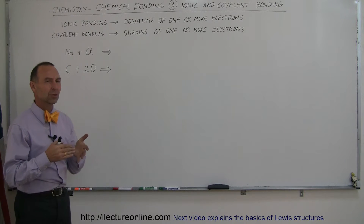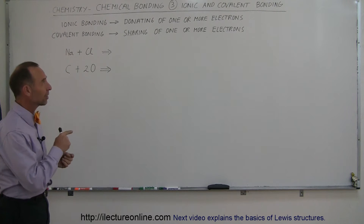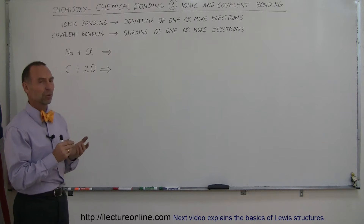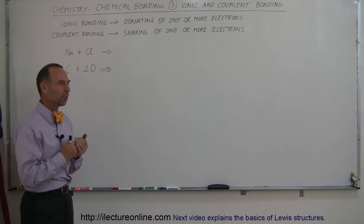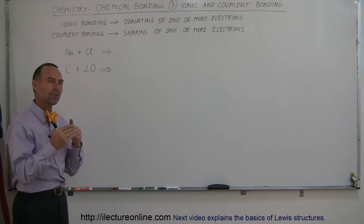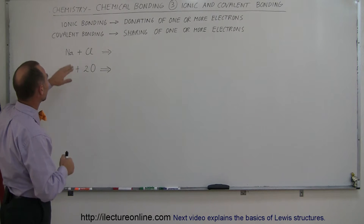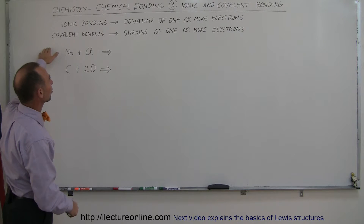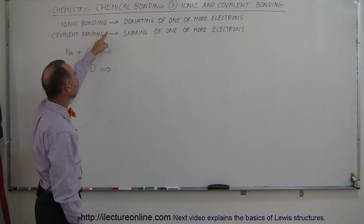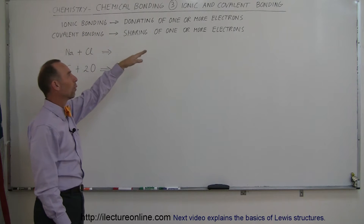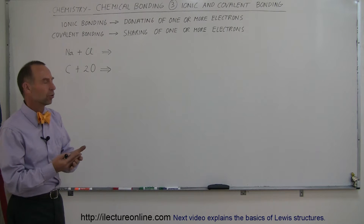Before we delve into Lewis structures and understand those a little bit better, let's take a look at the difference between ionic and covalent bonding. At this point, we probably have a pretty good idea, but I want to make it crystal clear. So let's go over the definitions. Ionic bonding is the donation of one or more electrons from one atom to another.